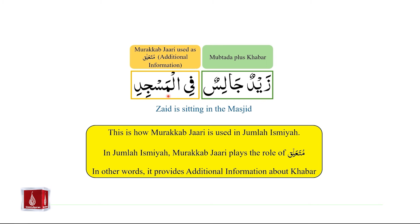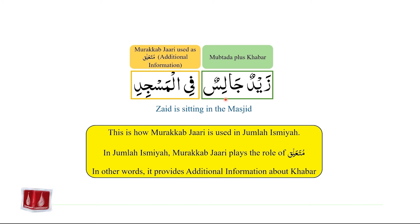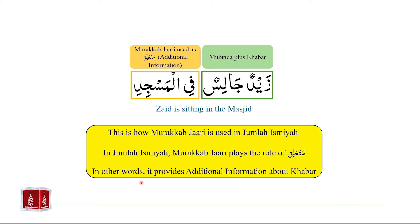Phil-masjiyah provides additional information about the khabar. Zaidun jalisun means 'Zaid is sitting.' Where is he sitting? In the masjid. So phil-masjidi gives us more information about the khabar. This is how murakkab-e-jaari is used in jumla-ismiyah — it plays the role of mutallik, meaning it provides additional information about the khabar.